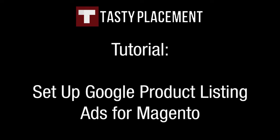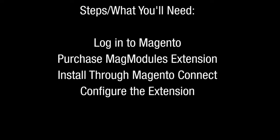We're going to set up product listing ads within the Magento system. Here are the steps we'll take and what we're going to need. We're going to use Magento, then purchase an extension through MagModules, then install the extension through Magento Connect, and finally configure the extension and test our work.